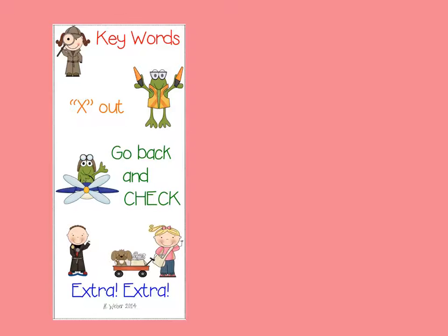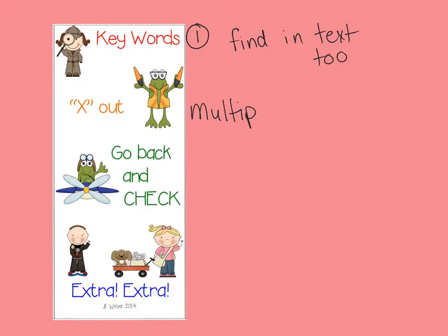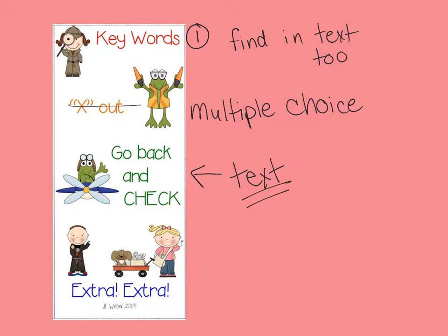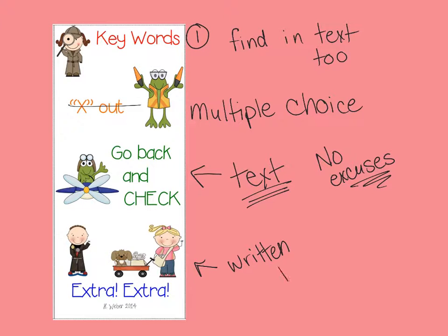Here are my tips. First and foremost, look for keywords in the question — you can go back into the text and find these keywords to help you hunt for answers. If it's a multiple choice question, eliminate answer choices that won't work — cross them out. Always with any question, go back into the text and check. The text gives you clues. And for written response, extra extra — be a reporter, fact check, and use that evidence.